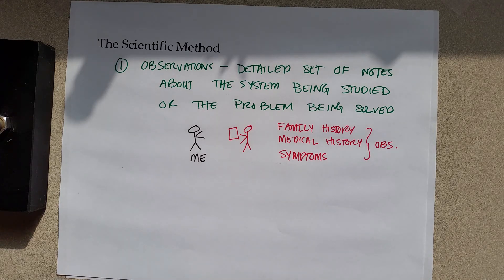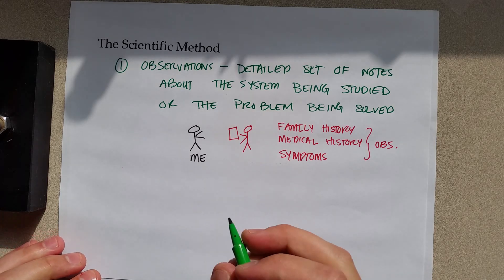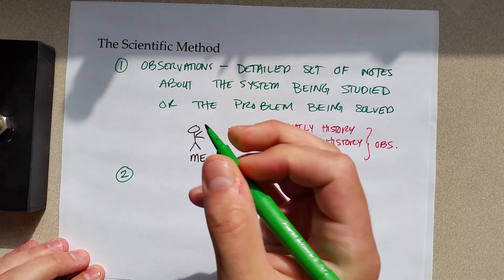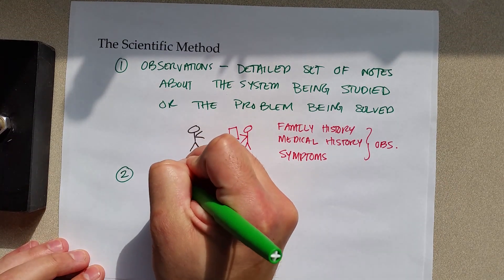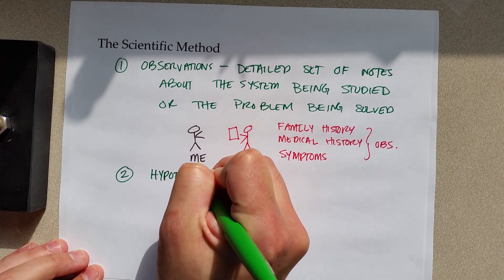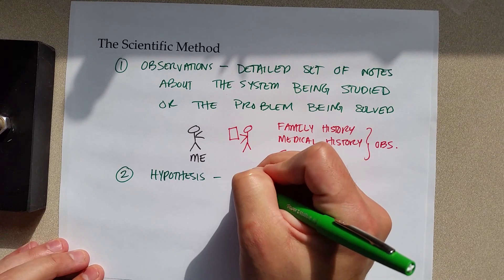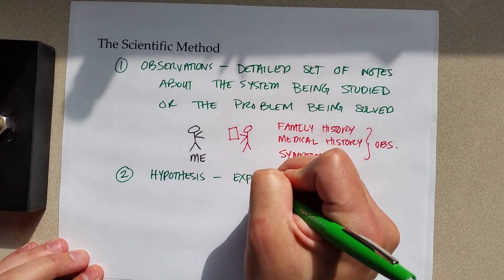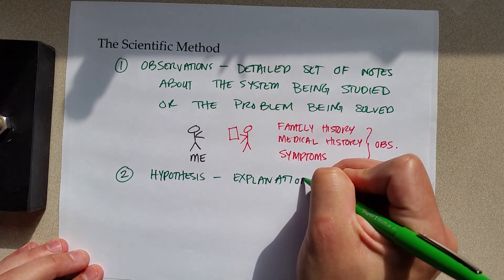The next step in the scientific method that's going to be used is forming a hypothesis. A hypothesis is an explanation based on observations.